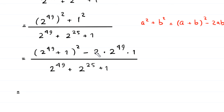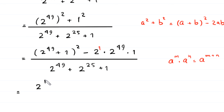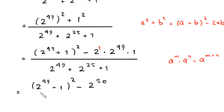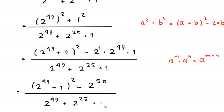Next, since 2 has power 1 here, by using the property a to the power m times a to the power n equals a to the power m plus n, the expression in the numerator becomes 2 to the power 49 plus 1 whole squared minus 2 to the power 1 plus 49, which is 2 to the power 50, divided by 2 to the power 49 plus 2 to the power 25 plus 1.